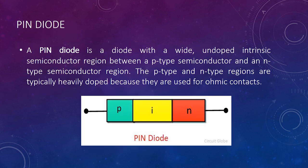Next, the PIN diode. A PIN diode is a diode with a wide undoped intrinsic semiconductor region between a P-type semiconductor and an N-type semiconductor region. The P-type and N-type regions are typically heavily doped because they are used for ohmic contacts. Below we can see a figure of a PIN diode.